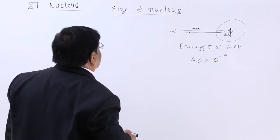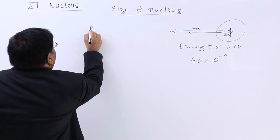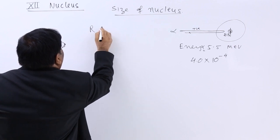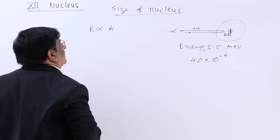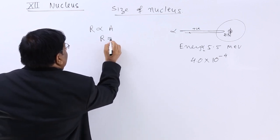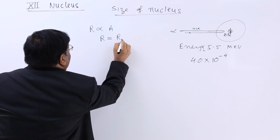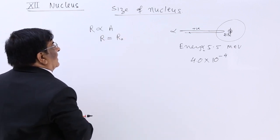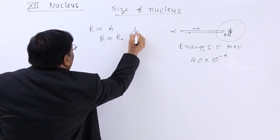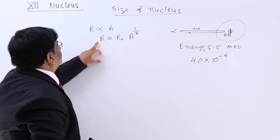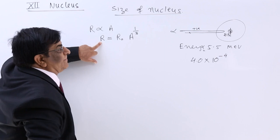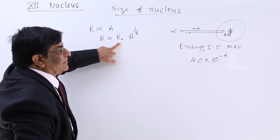So here we get a relation that radius of nucleus is depending upon atomic mass. And what is this relation? This relation is R is equal to a constant R₀, and now if we match the dimensions, this is atomic mass to the power one-third. This is the relation which gives radius of a particular nucleus of an element. Here R₀ is a constant.